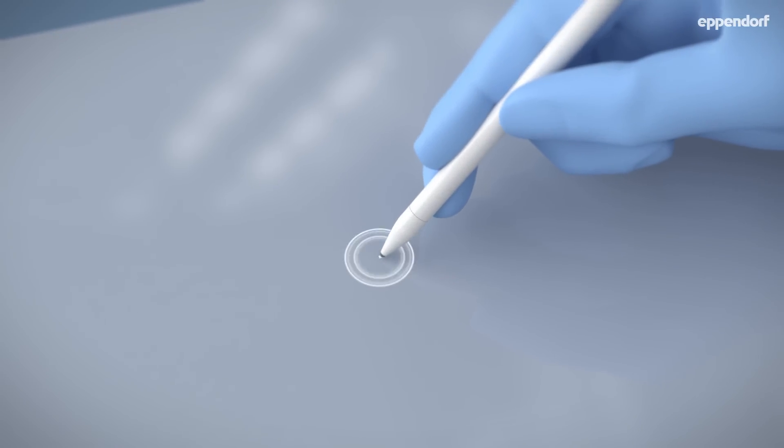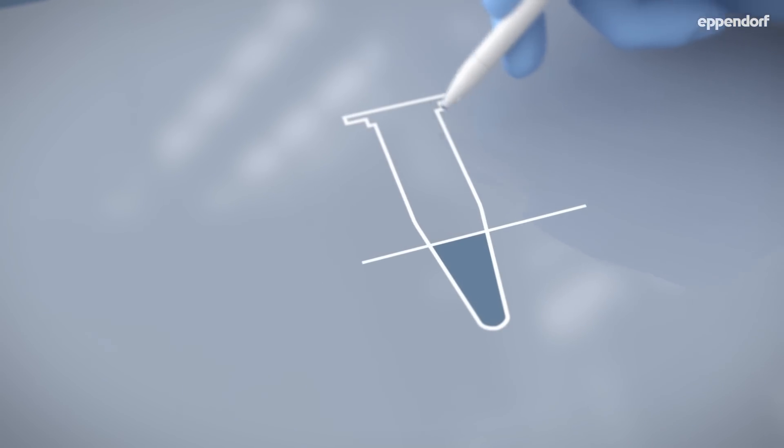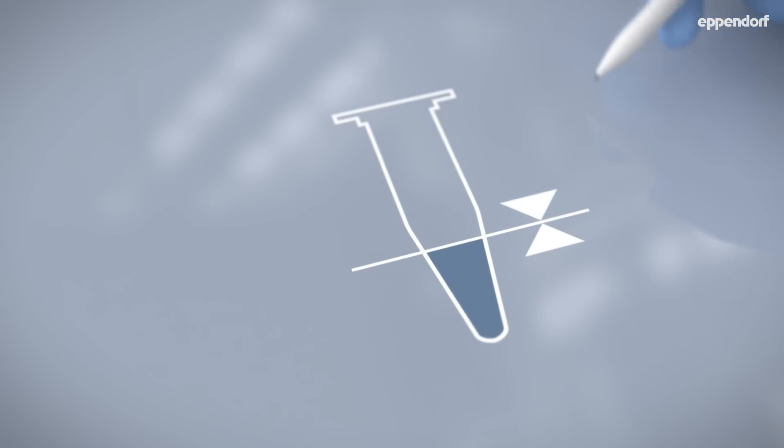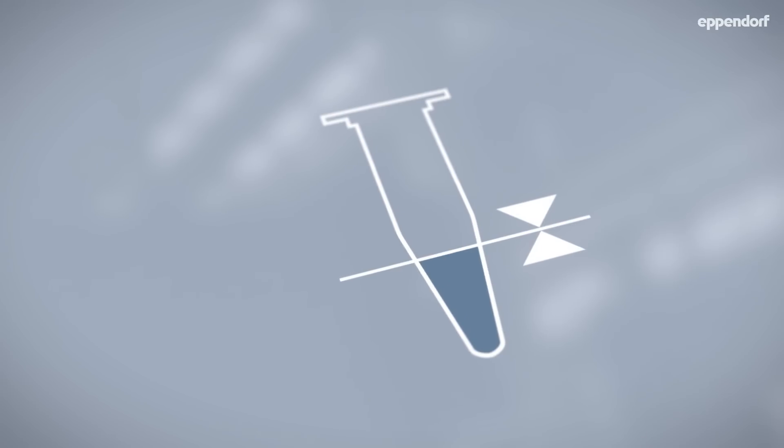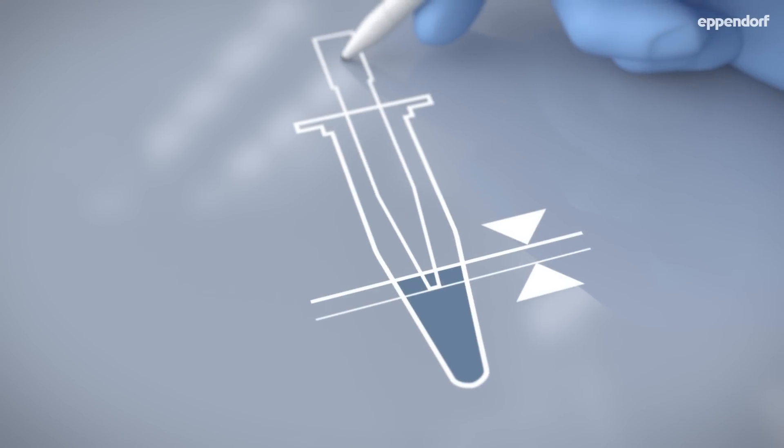First, it's important to get the immersion depth right. In general, you should immerse as little as possible to prevent the transfer of liquids on the outside of the tip. However, you also need to immerse deep enough to avoid taking up air instead of liquid.